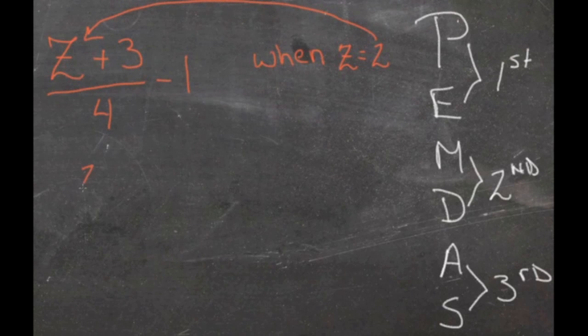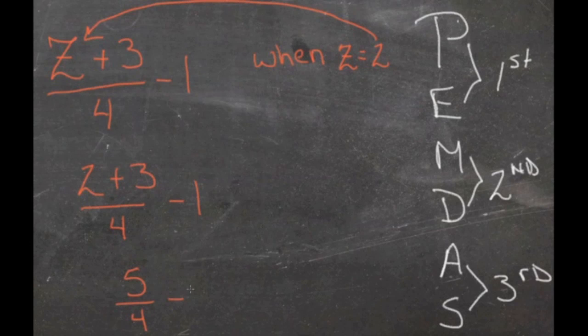That gives us 2 plus 3 over 4 minus 1. We do the top first, again as if it was in parentheses. 2 plus 3 is 5, gives us 5 over 4 minus 1. Now we have 5 fourths, which is the same as 1 and 1 fourth. So we have 1 and 1 fourth, take away 1, gives us just 1 fourth.